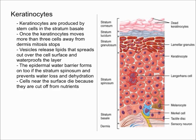As new keratinocytes are made, they push the older ones towards the surface. Once a keratinocyte moves more than two or three cells away from the dermis, mitosis stops. Mitosis by stem cells requires oxygen and nutrients, and they can only get that deep in the epidermis, close to the dermis.